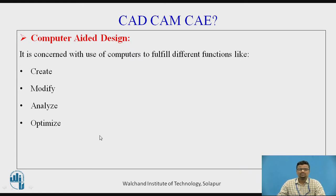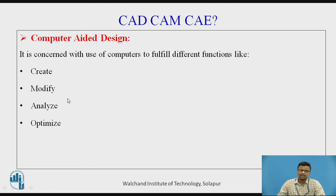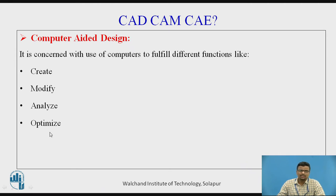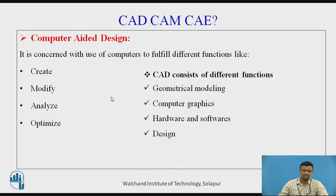Computer-aided design is the use of computers to fulfill different functions: creating a 3D model, modifying that 3D model, producing computer-aided drafting sheets, performing engineering analysis on the model, and then validating and optimizing those outputs — that is, 3D modeling of any mechanical component and engineering analysis of that model.